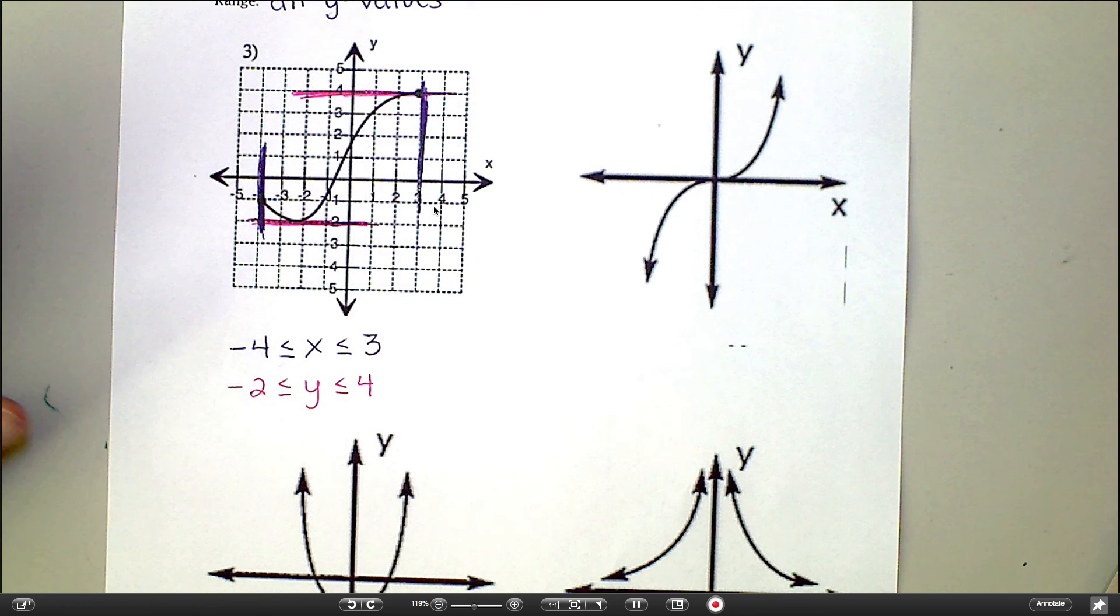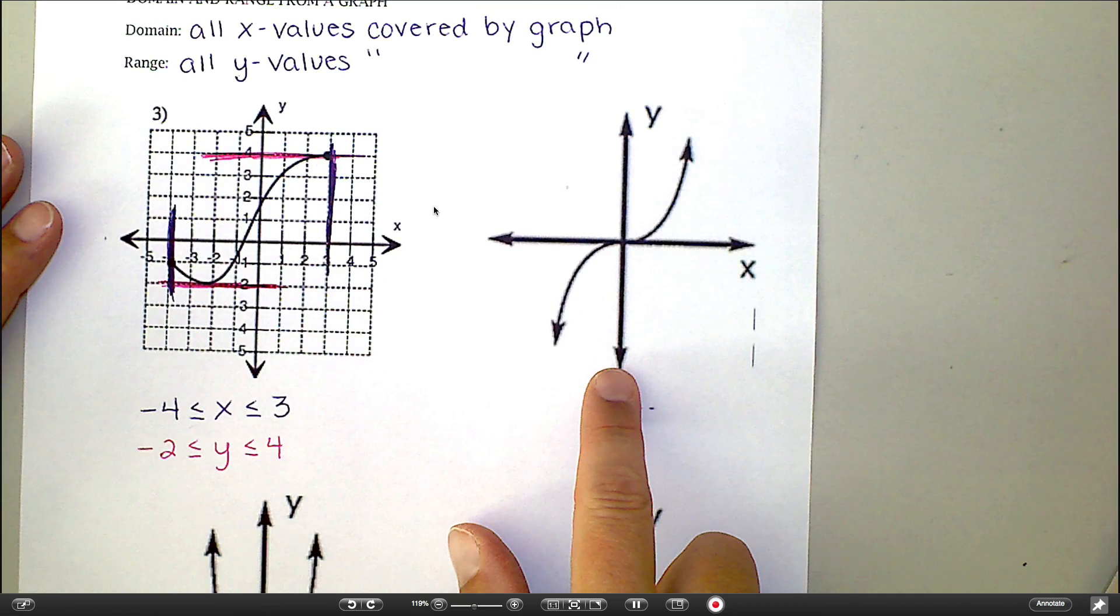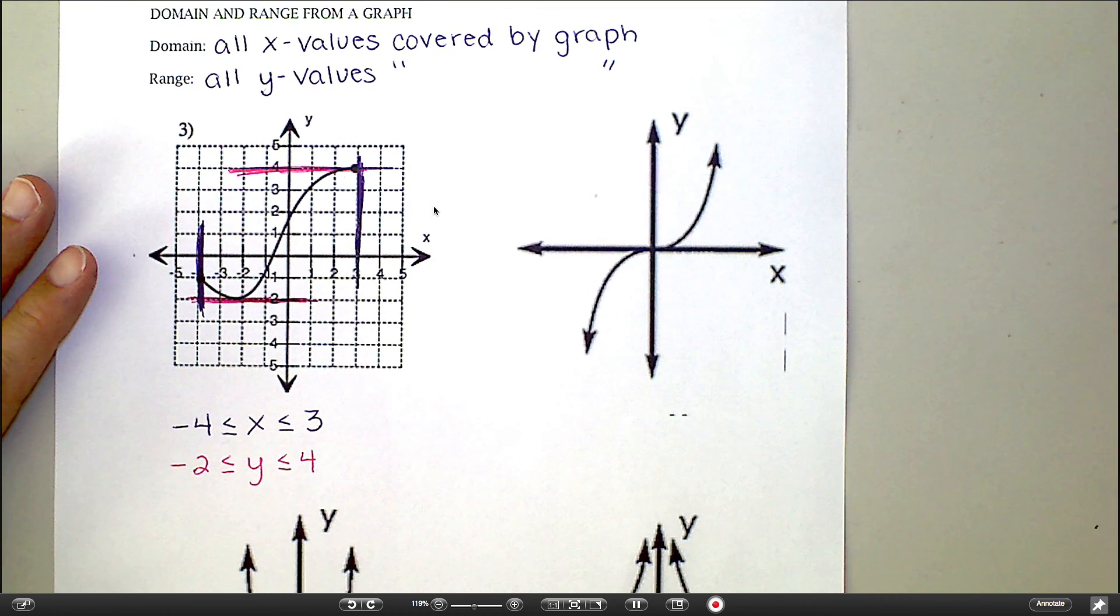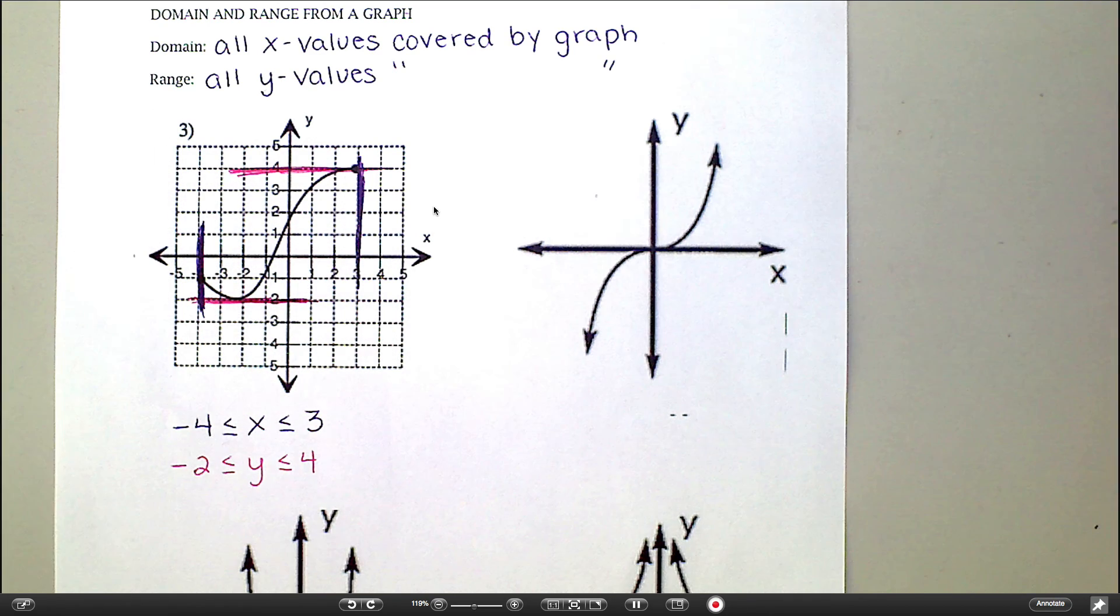And that works out really well when you have a nice finite graph, when it has clean end points and we can point to the numbers that it belongs on. But what happens when you go over here to this one? This one, I can't point to the highest up point or the farthest left point because these arrows mean that this graph keeps going and going and going. I could never point to the highest or the lowest or the leftmost or the rightmost. I can't find those points.